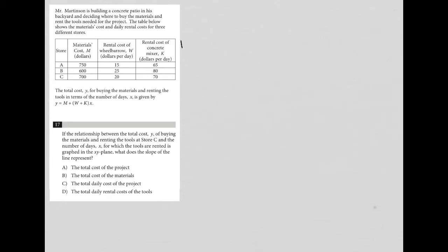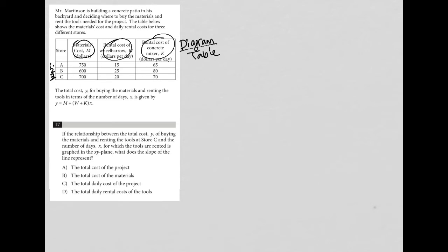This question provides us with a diagram and a table. The table tells us information about three different stores: store A, store B, and store C. We have material costs, rental costs of a wheelbarrow which is variable W, and rental costs of concrete which is variable K.